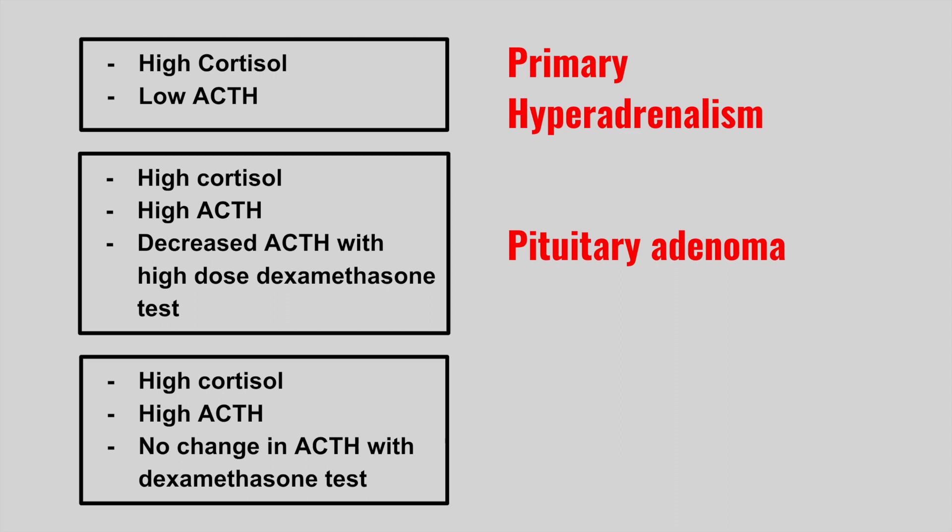The next patient has high cortisol, high ACTH, with no change in ACTH with the dexamethasone suppression test. This is small cell lung carcinoma or ectopic ACTH production.